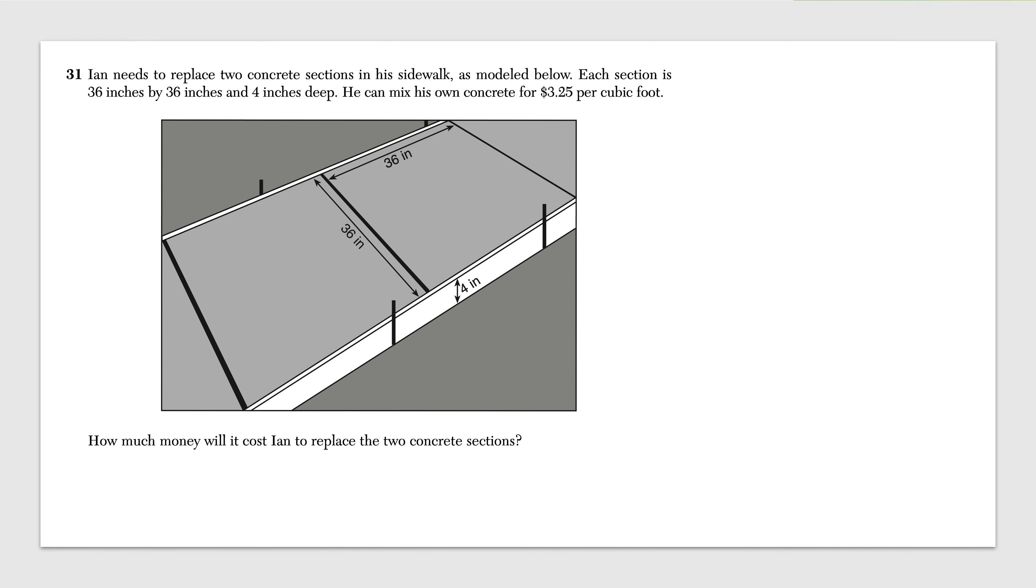Next up, Ian needs to replace two concrete sections in his sidewalk as modeled below. Each section is 36 inches by 36 inches by 4 inches deep. And then we have to charge per cubic foot. How much to replace the two, not the one, the two concrete sections?